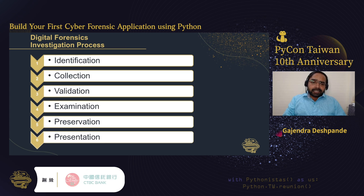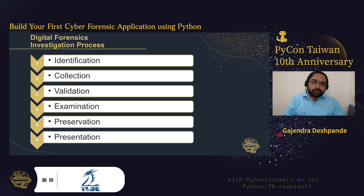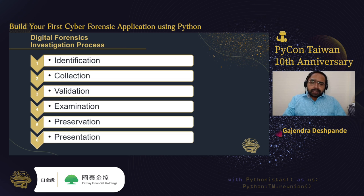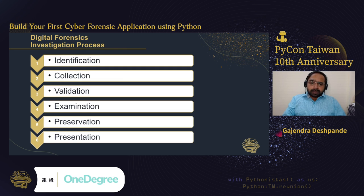The next step is validation. When data is copied from systems, it must be ensured that the data has not been changed. For that, hashing is used for integrity checks. The fourth step is examination, where the investigative officer can use ready-made tools or develop their own tools using Python. Data analysis techniques such as machine learning algorithms can also be used for identifying evidence or getting more insights regarding clues.